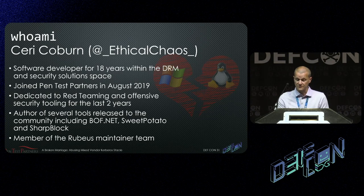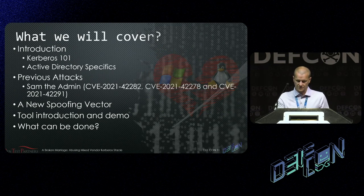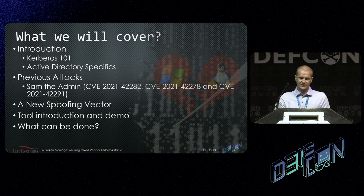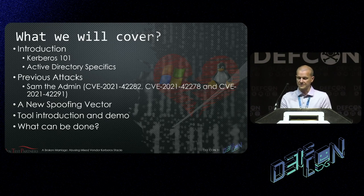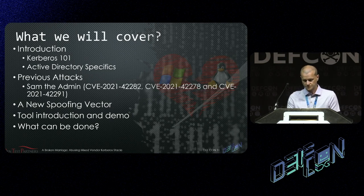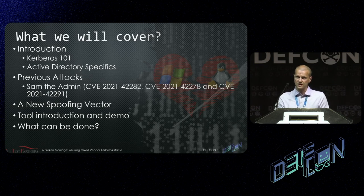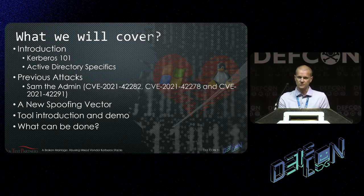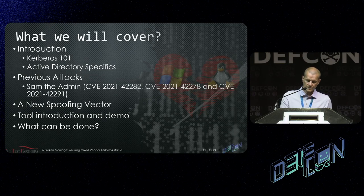I more recently became a member of the Rubeus maintainer team. So what we're going to cover in this talk today: I'm going to give a very quick introduction to Kerberos, go into some Active Directory specifics on authentication and authorization, quickly cover some spoofing attacks from previous vulnerabilities — namely the SAM-the-Admin group of CVEs — and then cover the premise of this talk, which is a new spoofing vector, some changes made to Rubeus to exploit it, a new set of enumeration tools, and finally what can be done to mitigate this new vector.